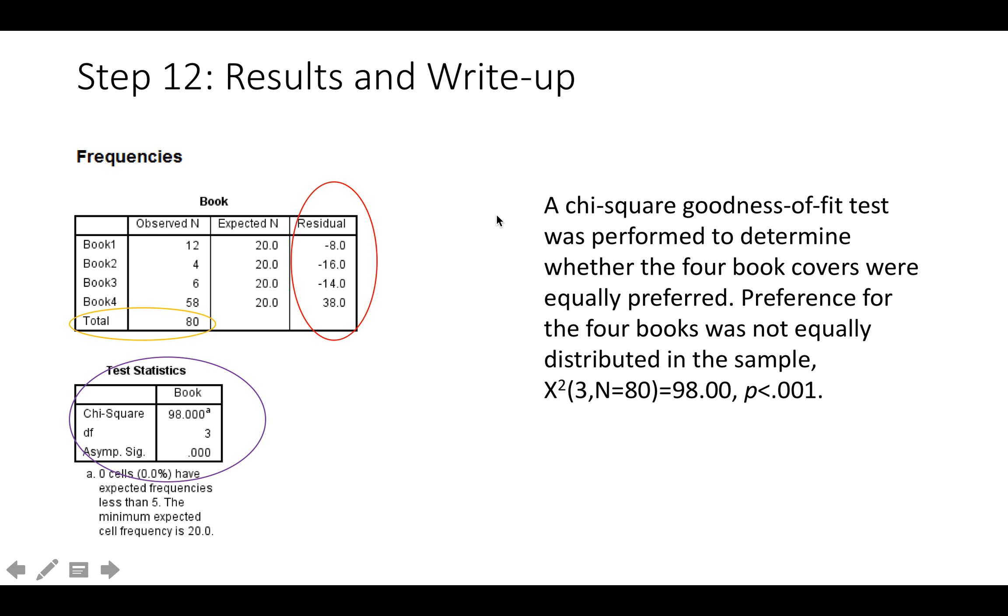So if you were going to write up the test in APA format, you would say a chi-square goodness of fit test was performed to determine whether the four book covers were equally preferred. Preference for the four books was not equally distributed in the sample. And then this is the symbol for chi-square. 3 is the degrees of freedom, comma n is the total number of participants, equals 98.00. You only have two decimal places in APA format, comma p in italics less than .001. And that's the end of your chi-square test.